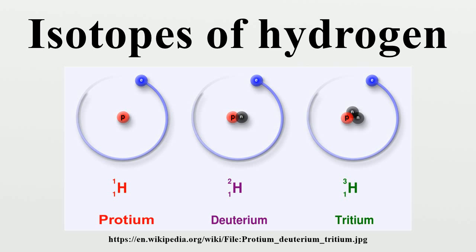Of these, 5H is the most stable and 7H is the least. Hydrogen is the only element whose isotopes have different names that are in common use today. The 2H isotope is usually called deuterium, while the 3H isotope is usually called tritium. The symbols D and T are sometimes used for deuterium and tritium. The IUPAC states in the 2005 Red Book that while the use of D and T is common, it is not preferred because it can cause problems in the alphabetic sorting of chemical formulae.